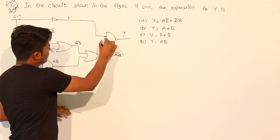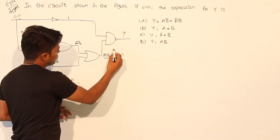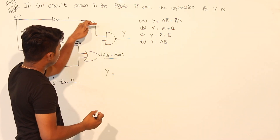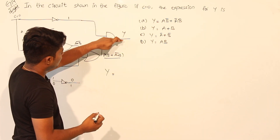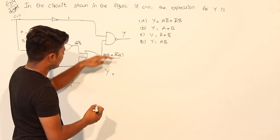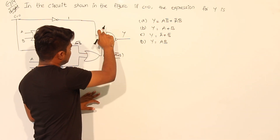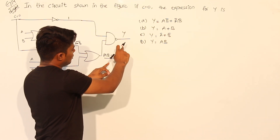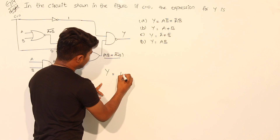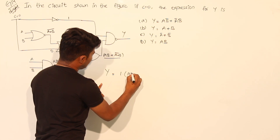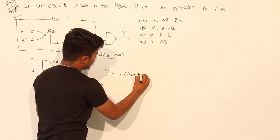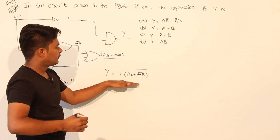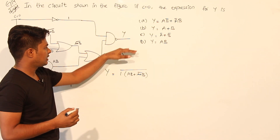This is a NAND gate. One input is 1 and the other input is AB + (A + B) bar. We can write the equation for Y as (X dot Y) bar. For the NAND gate it will become 1 into [AB + (A + B) bar] whole bar.